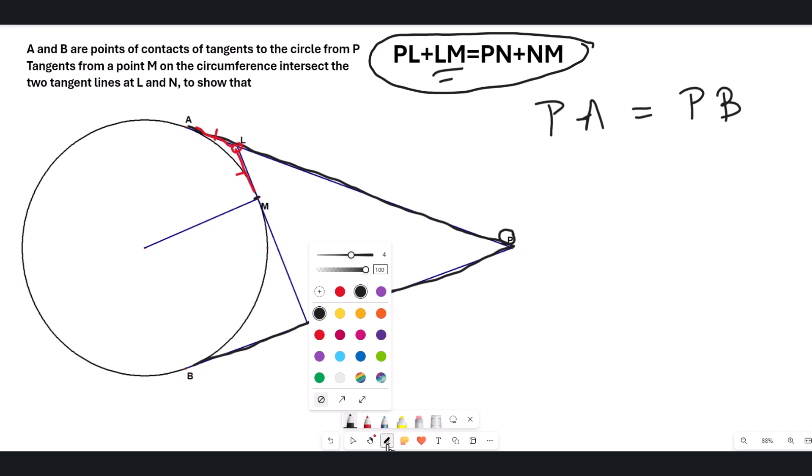That's how we are noticing this here. Now PA can be written as PL plus, not PA, I apologize, PL plus LA, and then PB may be written as PN plus NB.